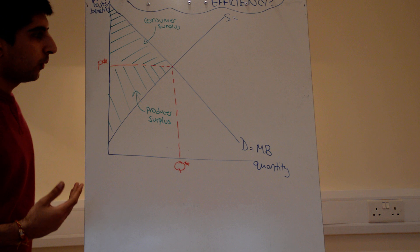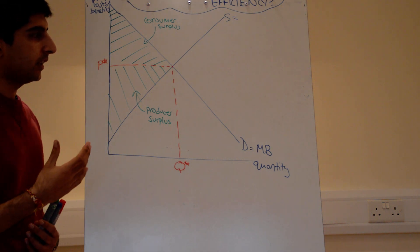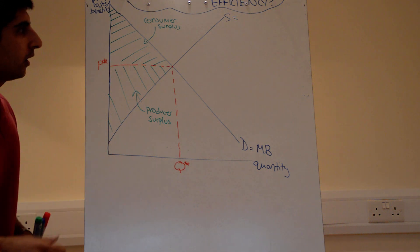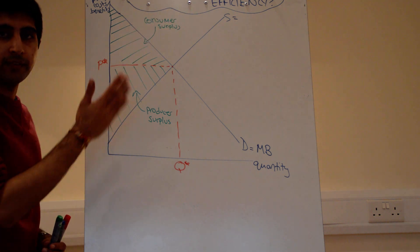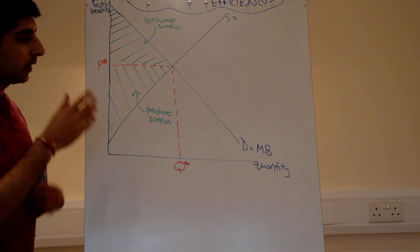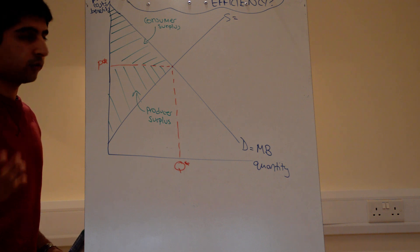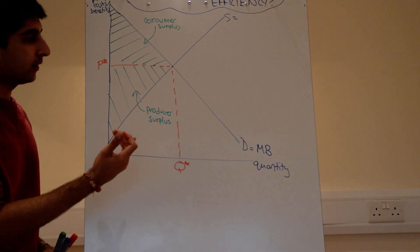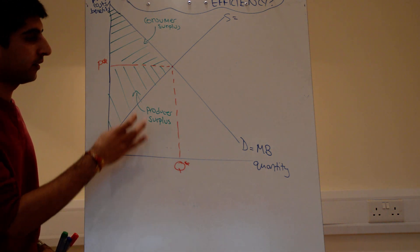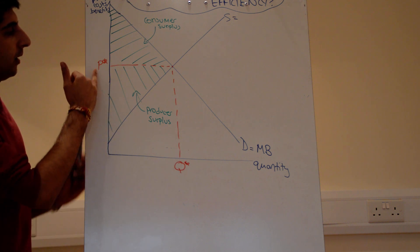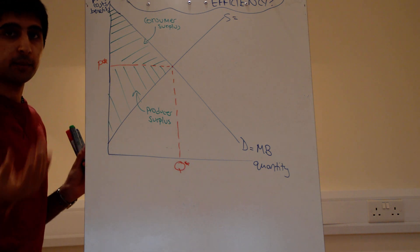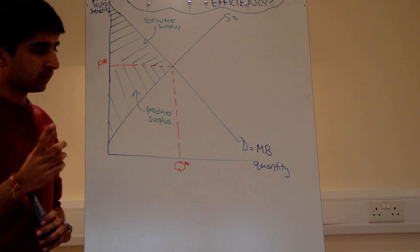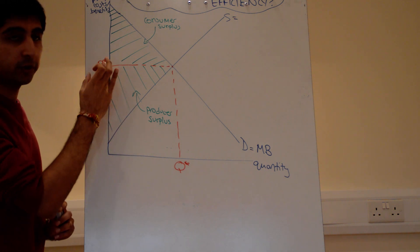What about supply? Supply actually gives us an indication of the cost producers are willing to supply at. Looking at the supply curve only, there were producers willing to supply goods or services below price P star. Producers are willing to supply those quantities at lower prices. By selling at price P star instead, these producers are benefiting on those units.